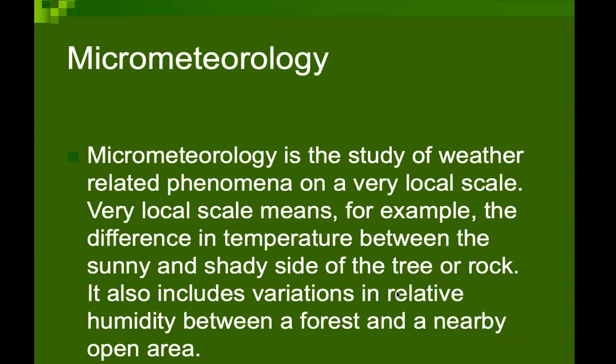Micro-meteorology is the study of weather-related phenomena on a very local scale. For example, the differences in temperature between the sunny and shady side of a tree. It also includes variations in relative humidity between a forest and a nearby open area of a garden or neighborhood.